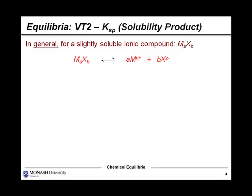In general, for a slightly soluble ionic compound, we'll give it this general formula, MA XB. You can see it dissociates in that form there, and so we can set up an equilibrium expression, what we call the Ksp expression, to look like this. Notice that the coefficients in that balanced equation appear as the powers to each of those respective concentrations, and that's important.